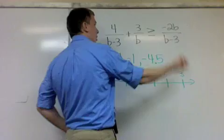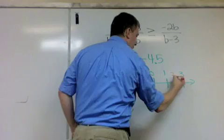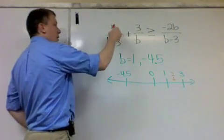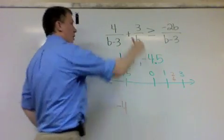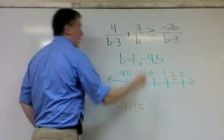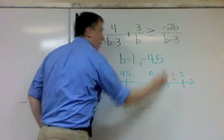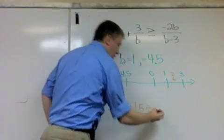Okay, so I'm going to plug in 2. So if I plug in 2, that's going right here. That's where 2 is. If I plug in 2, 4 over 2 minus 3 is negative 4 plus 3 over 2. So that's plus 1.5, greater than or equal to 2. That makes negative 4 on top and negative 1 on bottom,